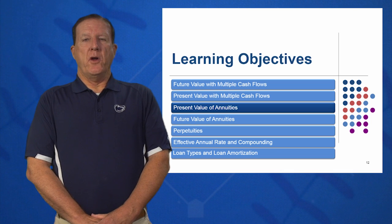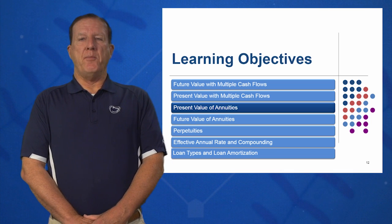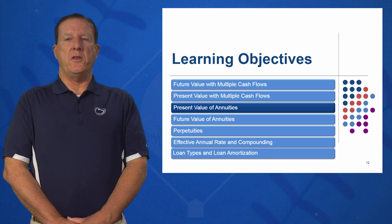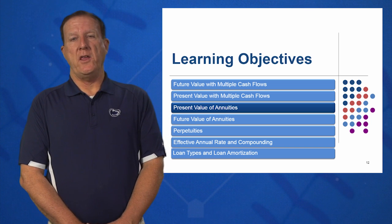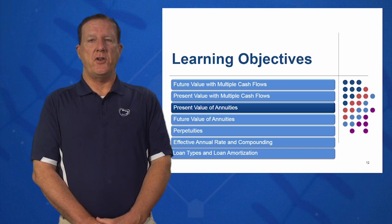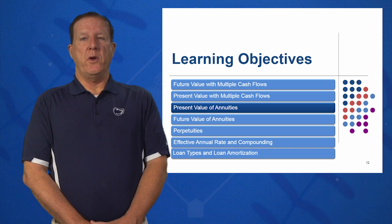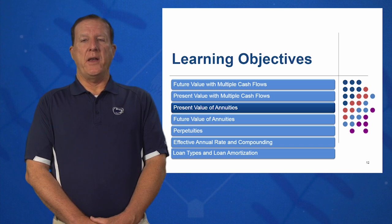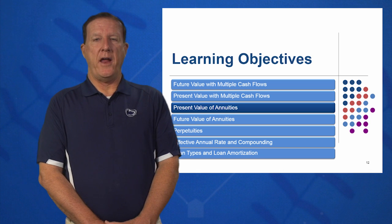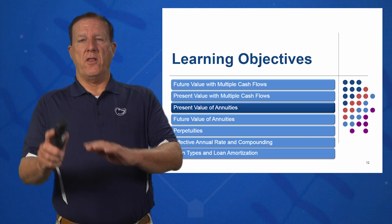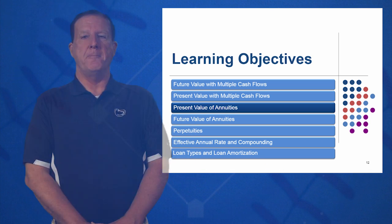In learning objective three, we're going to calculate the present value of an annuity. A couple questions we want to ask when doing these problems: number one, do we have an annuity — the same amount each month or same amount each year? If yes, we can use the present value annuity formula. Are we discounting to the left or compounding to the right? If we're discounting to the left, we're going to use the present value annuity formula.